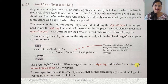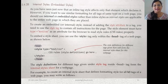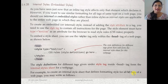The style definitions for different tags written inside the style tag within the head tag form the internal style sheet for a web page. For example, to create an internal style sheet that defines formatting for all h3 tags, you write the CSS rules inside the style tag in the head section.